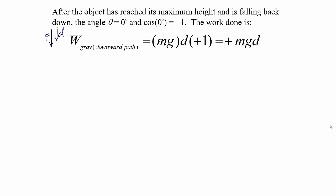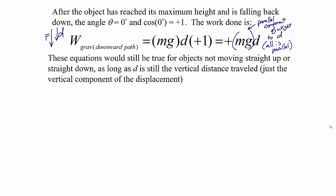The work done by gravity as something is moving downward is positive mg times the vertical distance — the mass times 9.8 meters per second squared if we're on Earth, times the vertical distance the object travels. Again, work is the parallel component of the force times the distance. Here, all of the force of gravity — all of the weight mg — is parallel to the motion. So the work done is positive mg times the vertical distance. These two equations hold for objects not moving straight up or straight down, as long as d is still the vertical distance traveled — the vertical component of the displacement.